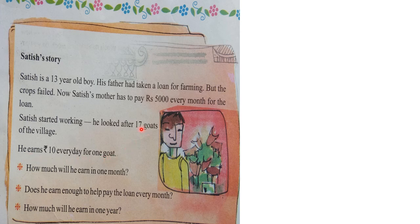If he looks after 17 goats, first we have to understand: for 1 goat for 1 day, he will earn Rs. 10. So for 17 goats for 1 day, he will earn 17 × 10, that means Rs. 170 per day for looking after 17 goats. Now, how much will he earn in 1 month? How many days are there in 1 month? There are 30 days.